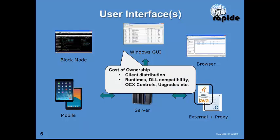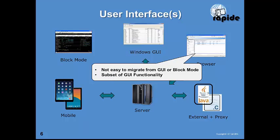For the Windows GUI, a common theme is the high cost of ownership — distributing clients to hundreds or thousands of individual workstations and keeping them up to date as the underlying operating system, runtimes, Visual C runtimes, and OCXs come in and out of support is costly. For browser, using Gen to build a browser application has been quite challenging because the standard Gen web functionality is a subset of the GUI functionality, and there are significant differences between platforms when migrating from Windows GUI to web.